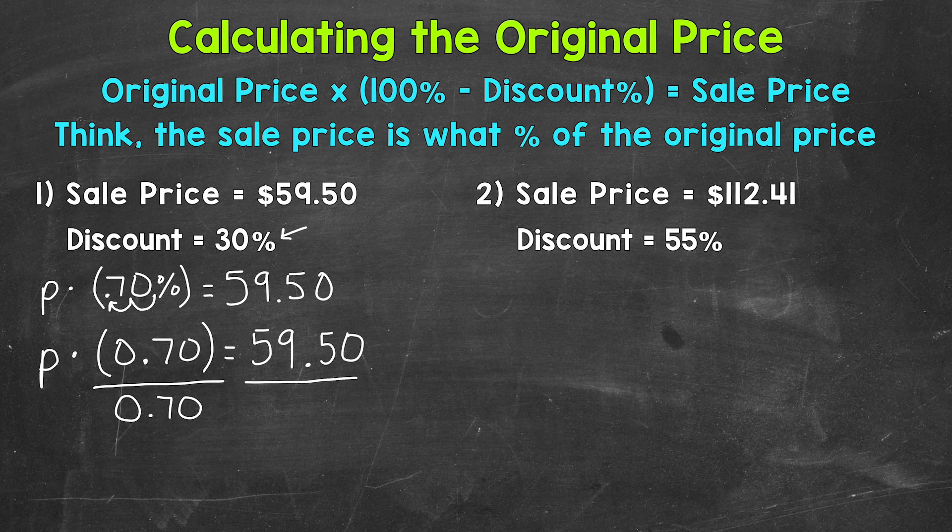So let's divide this side by 0.70 as well. So our variable of P, the original price, is now isolated. And we can do 59.50 divided by 0.70 to get our original price. And that's going to give us $85. So $85 is our original price.